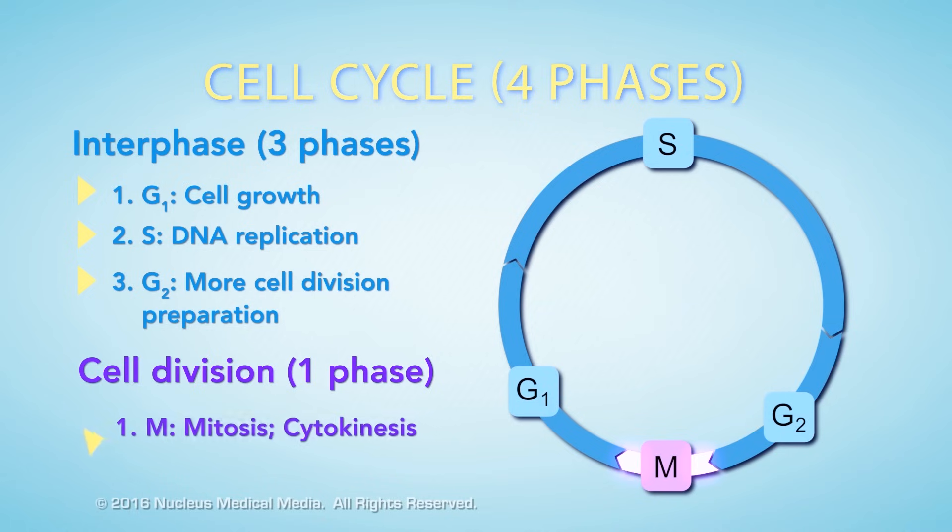Finally, we have cell division in the M phase. The M phase consists of mitosis, which is nuclear division, and cytokinesis, or division of the cytoplasm. We'll explore the details of mitosis and cytokinesis separately.